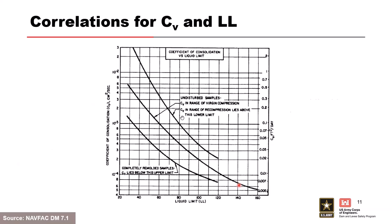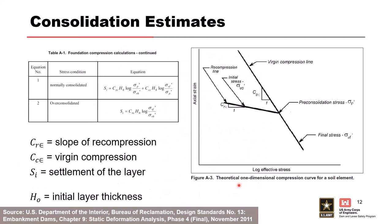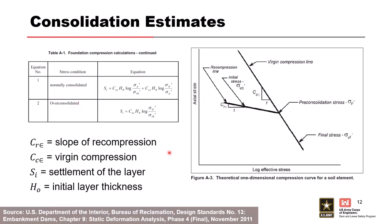This graph shows the relationship between liquid limit and the time rate C sub V. This camber design content is straight out of Design Standard Number 13. For the exercise, we'll be using equations for normally consolidated and over-consolidated material. I'll give you all the values you need to plug into these equations, and we'll calculate how much consolidation we have in the foundation, add that to our embankment settlement, and come up with how much camber we need.